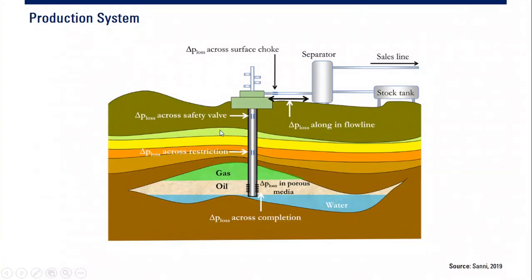This is the onshore production system. Previously we saw offshore; now this is onshore. You can see we have the reservoir with the water layer, the oil layer, and also the gas cap. The well produces fluid from the reservoir, and the fluid goes to the surface facility where we have a separator and stock tank to store the oil, and then a sales line.